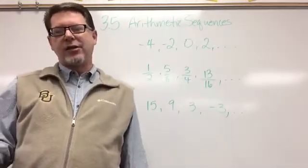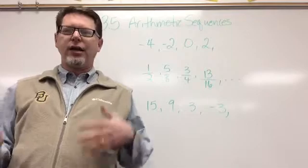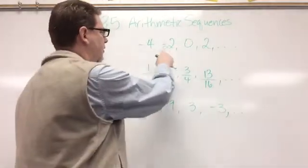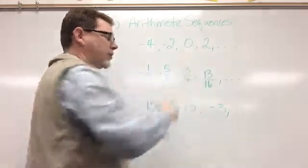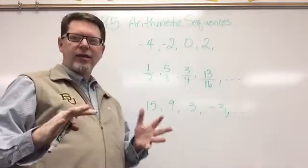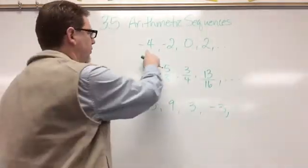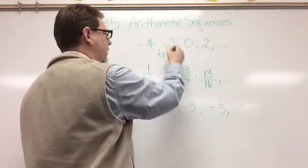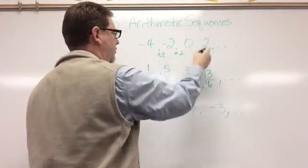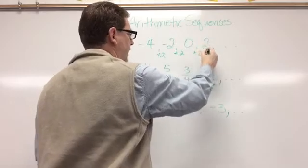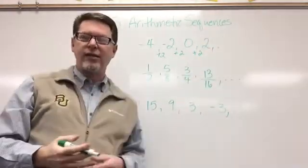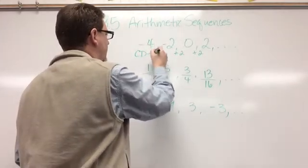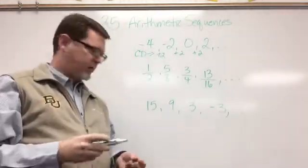See if they actually are arithmetic, and if they are arithmetic, what is the common difference. I have negative four, negative two, zero, two. How do I get from negative four to negative two? I add two. From negative two to zero, I add two. From zero to two, I add two. So yes, it is an arithmetic sequence and the common difference is positive two.